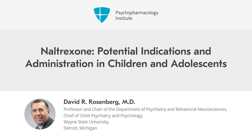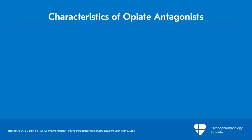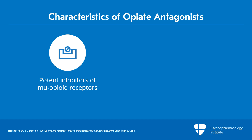Turning to video two: naltrexone, potential indications and administration in children and adolescents. Opiate antagonists don't readily cross the blood-brain barrier, but they are potent competitive inhibitors with an affinity for mu receptors, which are found in very high concentration in bronchial smooth muscle and the digestive tract.